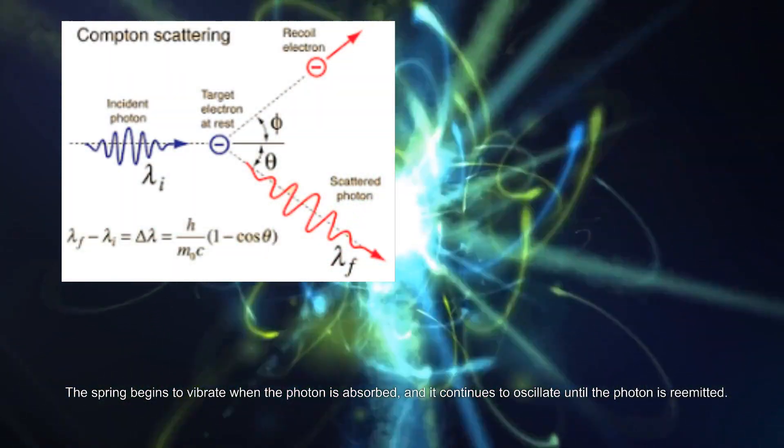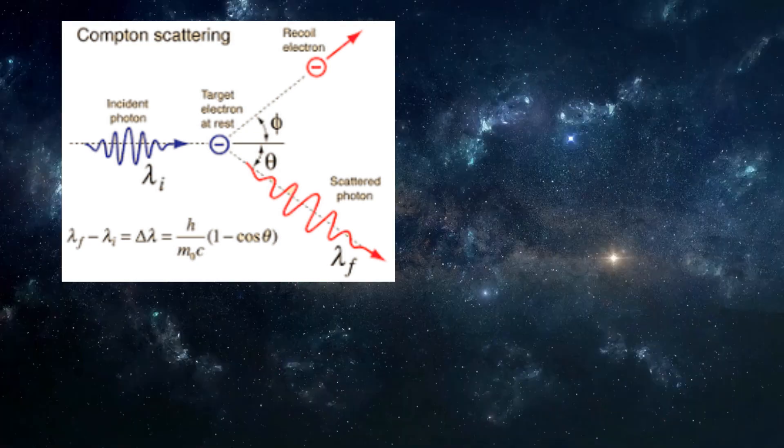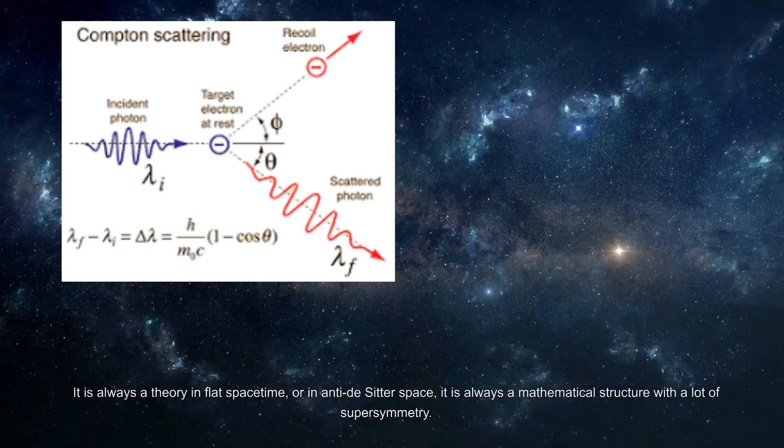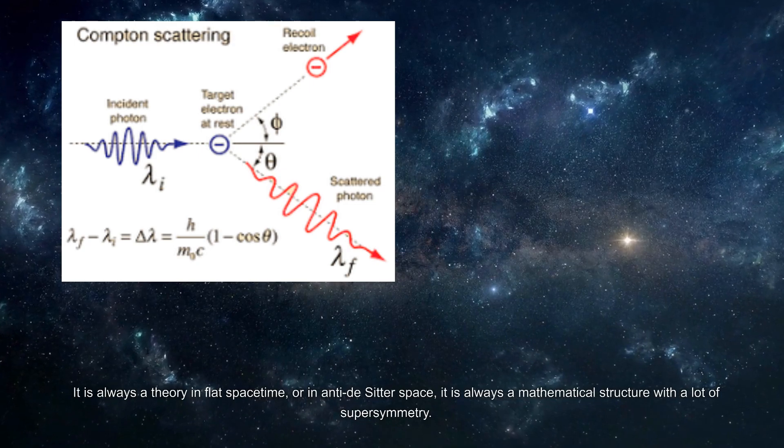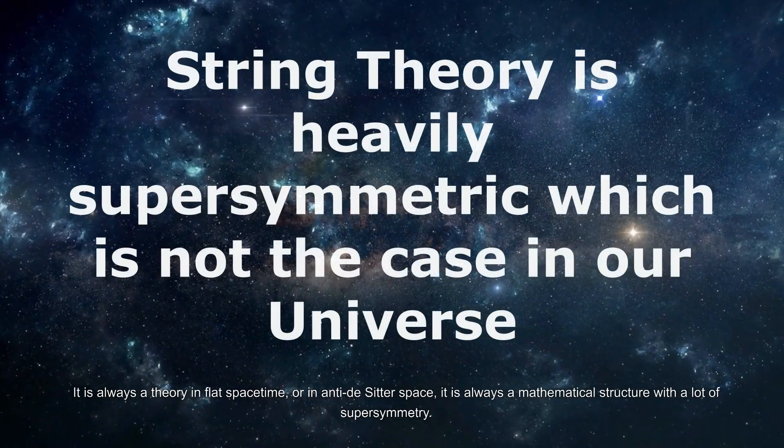The photon is re-emitted after the electron absorbs it. The spring begins to vibrate when the photon is absorbed, and it continues to oscillate until the photon is re-emitted. It is always a theory in flat space-time or an anti-de Sitter space. It is always a mathematical structure with a lot of supersymmetry.